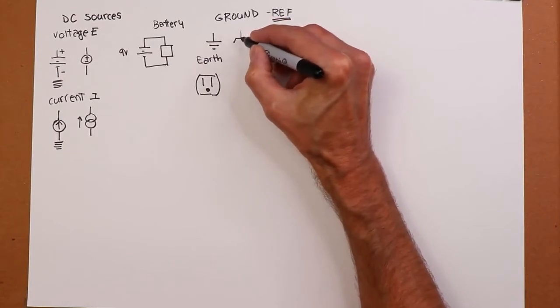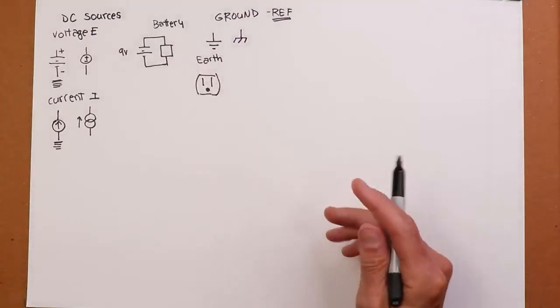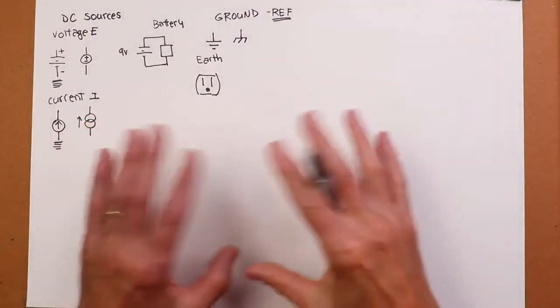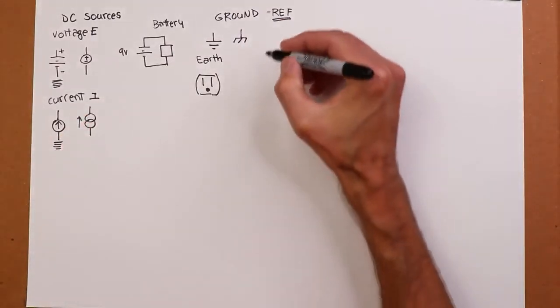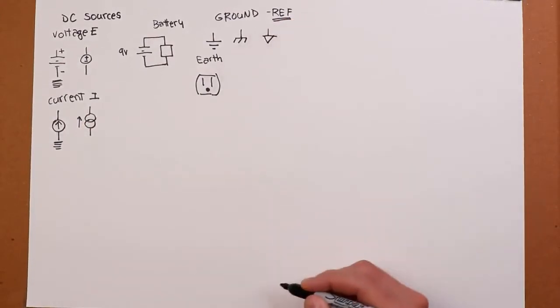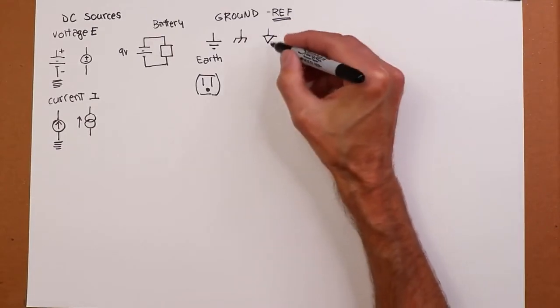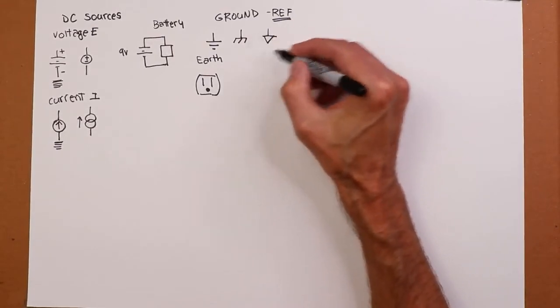So we have two other symbols for that. This is the first one. This is called a chassis ground. So it's a common. Typically, this would go back to the metal chassis of a device. And then we also have this sort of thing. This is a system ground, a signal ground as it's often referred to.